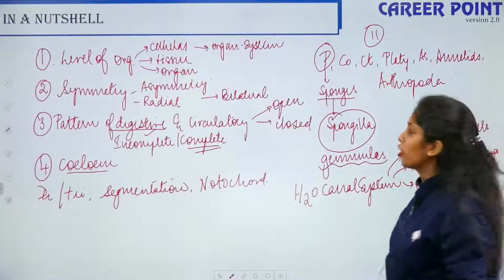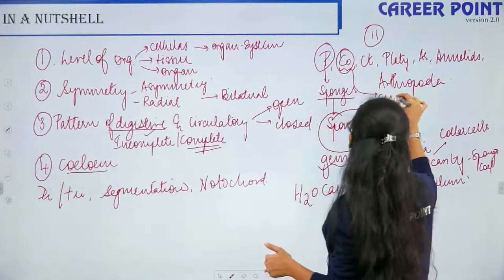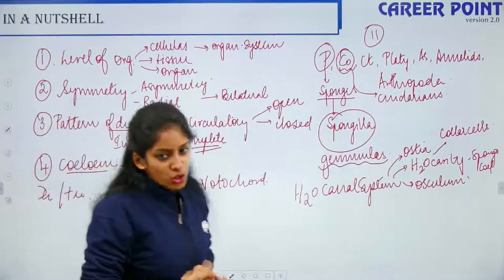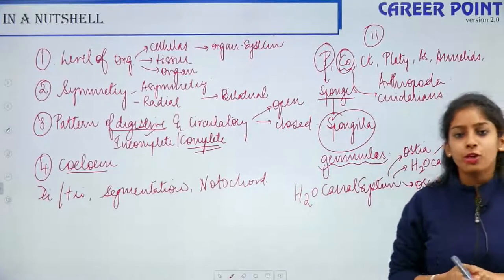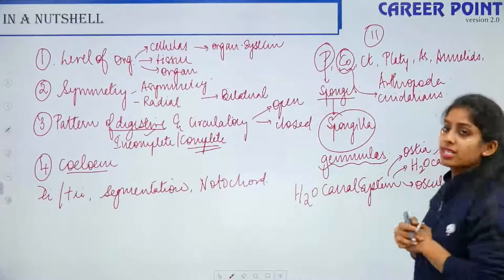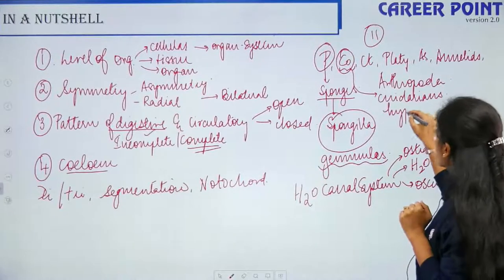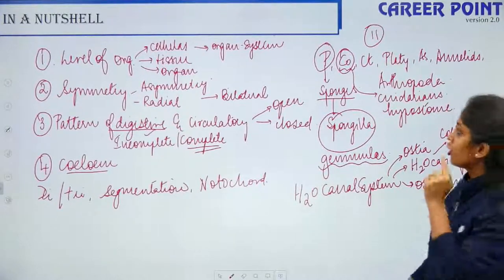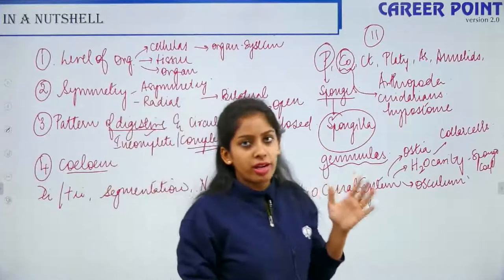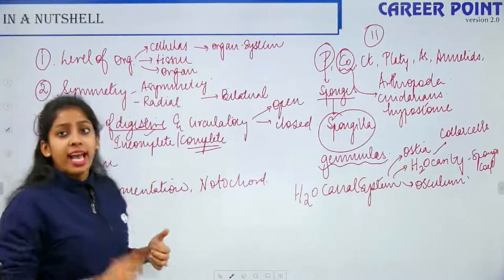The water cavity has cells known as collar cells or choanocytes. Moving on to Coelenterata — also known as Cnidarians or nematocysts — they contain a stinging capsule in the tentacles. They have a gastrovascular cavity with an opening called the hypostome. Coelenterates have two body forms: polyp, which is sessile and cylindrical; and medusa, which is umbrella-shaped and can freely move.